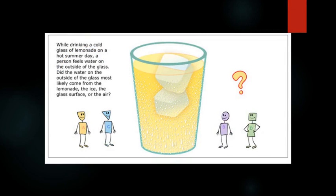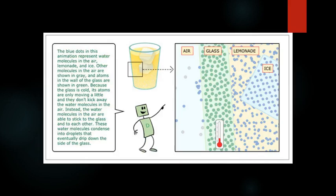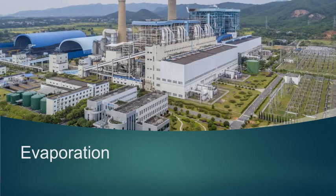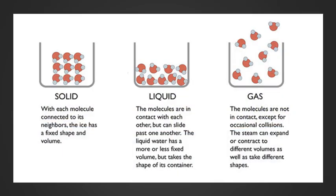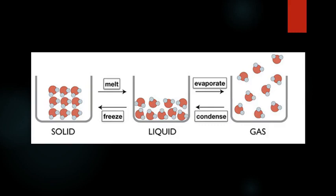The little tiny bubbles that you would see on a cold glass of lemonade or a cold can of soda is what we call condensation. When you hang your clothes out on the line and it dries, this process is known as evaporation.